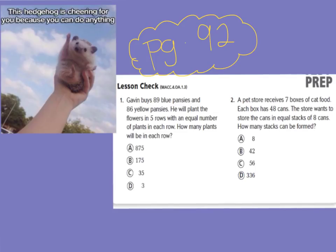All right, friends. Our homework tonight is on page 92. You are only doing numbers 1 and 2 on page 92. I want you to pay attention in number 1 that it says that they want 89 blue pansies and 86 yellow pansies. So pay attention to that keyword. And in number 2, it says that there are 7 boxes of cat food and each box has 48 cans. So those are some keywords to pay attention to for your homework tonight. Remember only numbers 1 and 2.